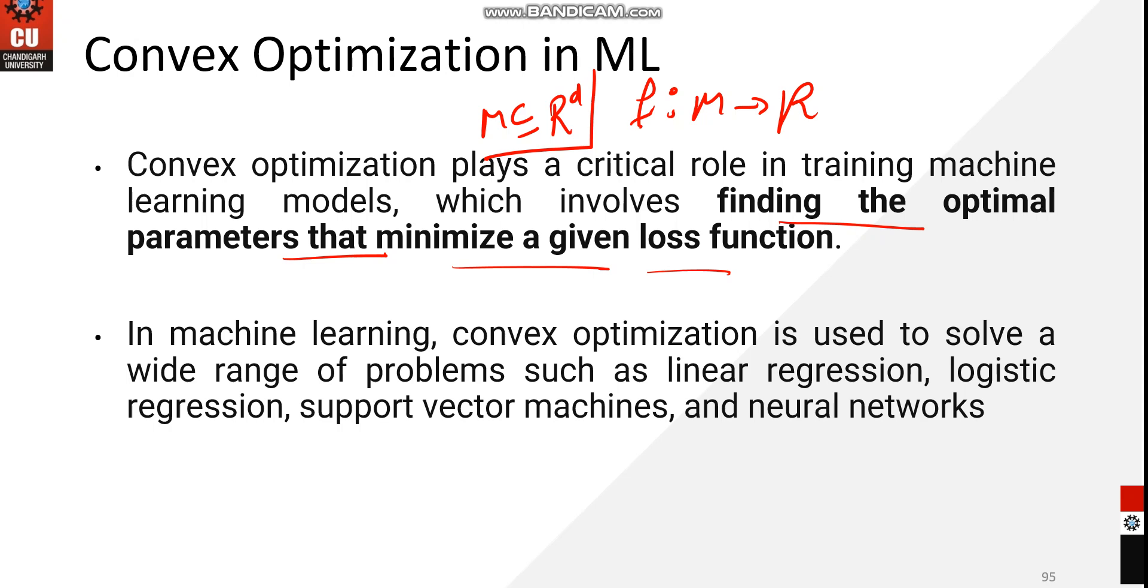m is simply a subset of the space with dimension d, and it is mapping to the real world. When we talk of the space with certain d dimensions, we can also denote it as R square, which describes two-dimensional space.